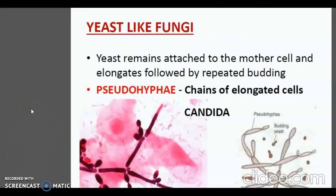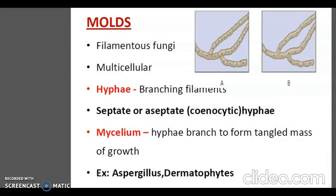Yeast-like fungi grow partially as yeast and partially as elongated cells resembling hyphae. They form a pseudomycelium or pseudohyphae, which are chains of elongated cells. Candida albicans is a pathogenic yeast-like fungus. Molds or filamentous fungi form true mycelia and reproduce by the formation of different types of spores. Dermatophytes are examples of pathogenic molds. Elongation of the cell produces a tubular thread-like structure called hyphae, and a tangled mass of hyphae constitutes the mycelia.